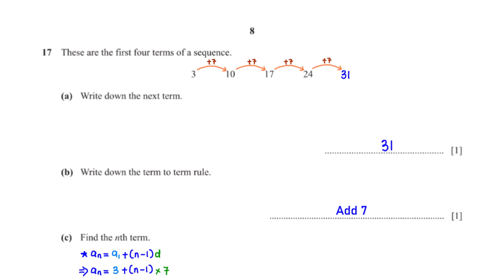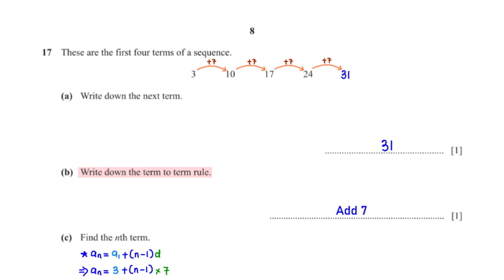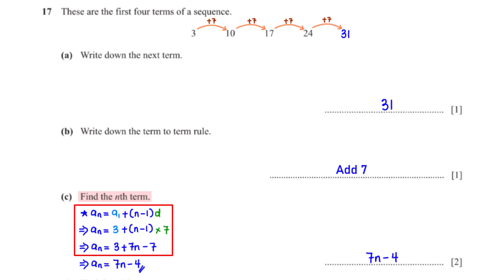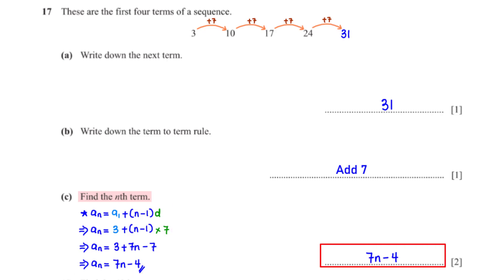These are the first four terms of a sequence. Write down the next term. The terms have a constant difference of plus 7, so we add 7 to 24 to get 31. The term-to-term rule is to add 7. For the nth term, a₁ is 3 and d is 7. Expanding gives 7n minus 7; then 3 minus 7 is negative 4, so the nth term is 7n minus 4.